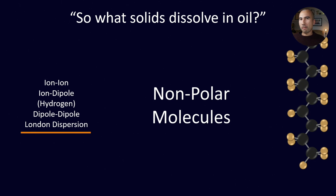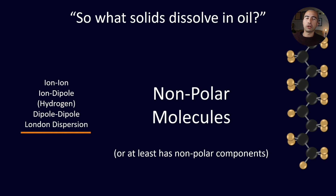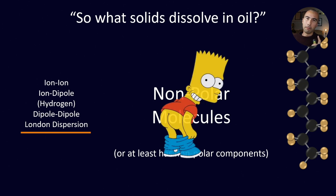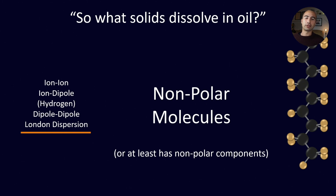Ultimately it's going to be solids which only have London dispersion forces — so that effectively means non-polar molecules, or at least molecules that have a non-polar component to them. Detergents, for example, are generally made of two sections: a hydrophilic and a hydrophobic end. The hydrophobic end, which is the oil-loving portion, is non-polar — it has a non-polar tail that enables it to be taken up by the oil. But that's not an entirely complete answer, because water is always the same. Actual H₂O is the same no matter where you go in the world, so you can describe its solvency extremely well.